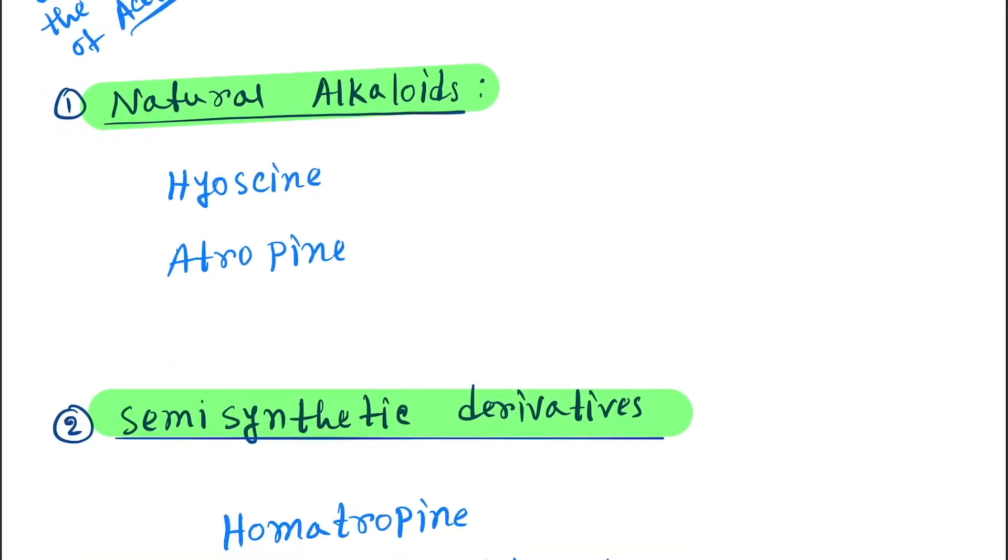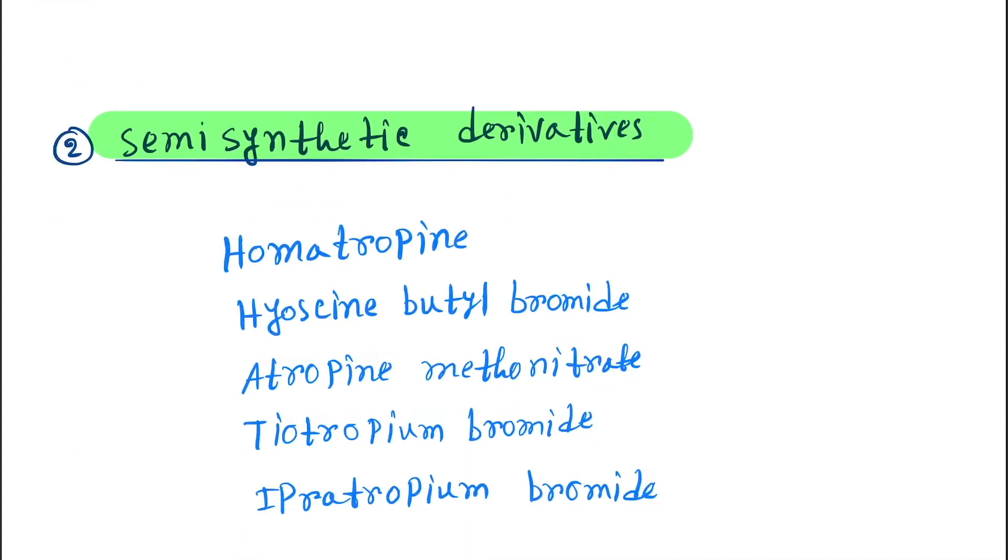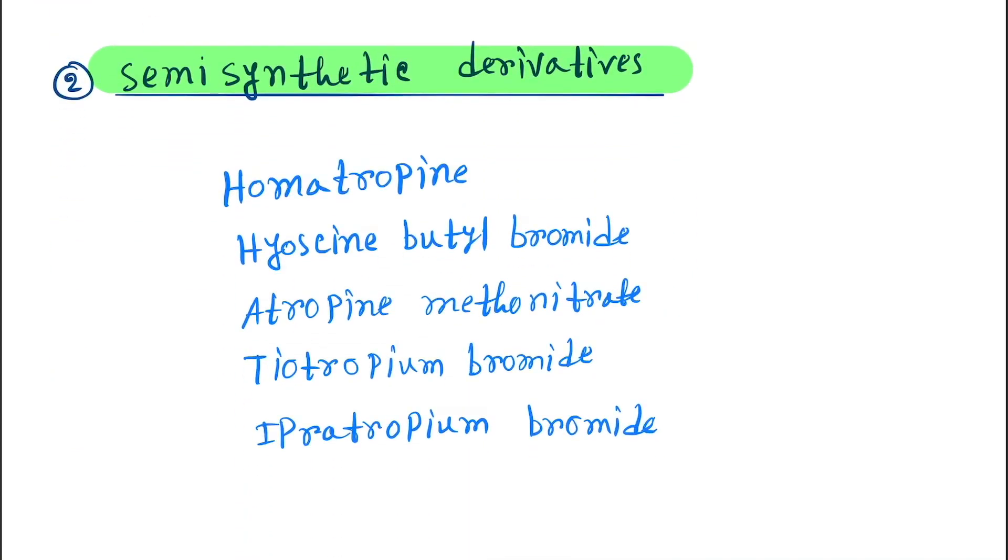First is natural alkaloids: hyoscine and atropine. Next is semi-synthetic derivatives. Here you can remember HATI HOMA.